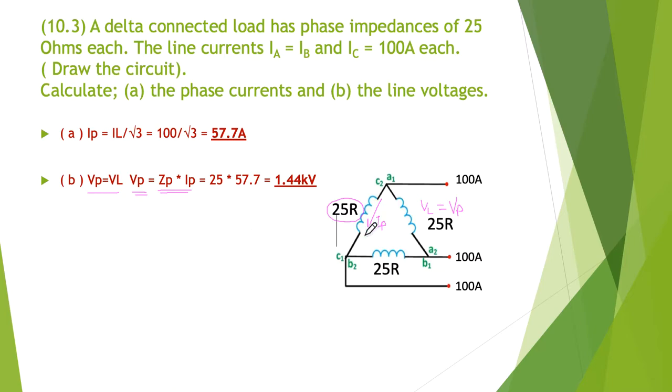So our voltage line and our voltage phase in delta are the same. So we know that we have our 25 ohms and we know we have 57.7 amps. We simply multiply those two together, Ohm's law. And we discover that we actually have a line voltage and phase voltage of 1.44 kilovolts.